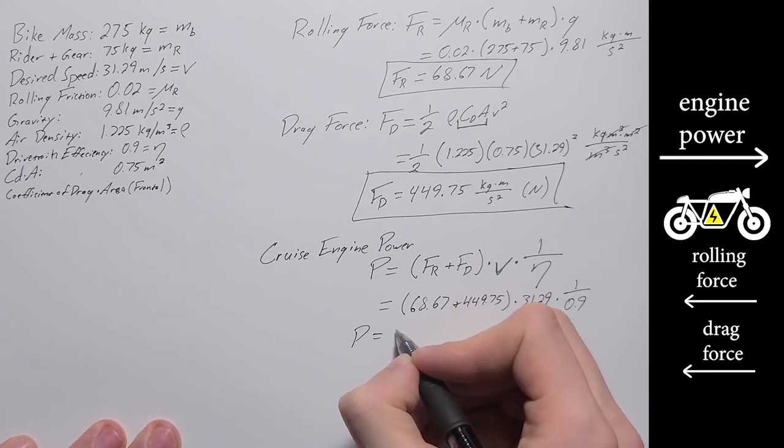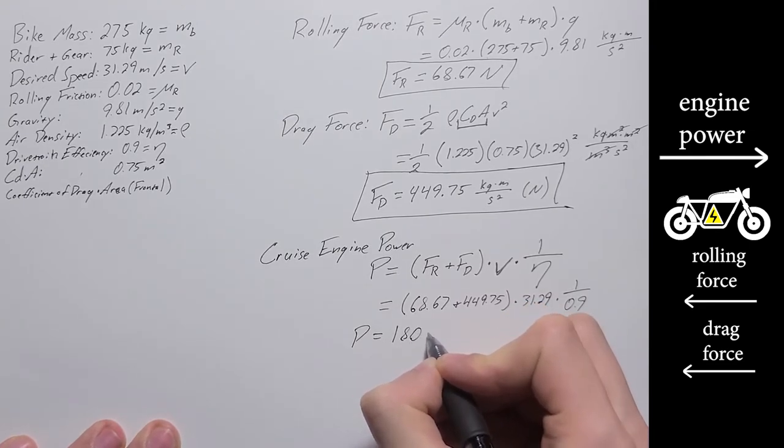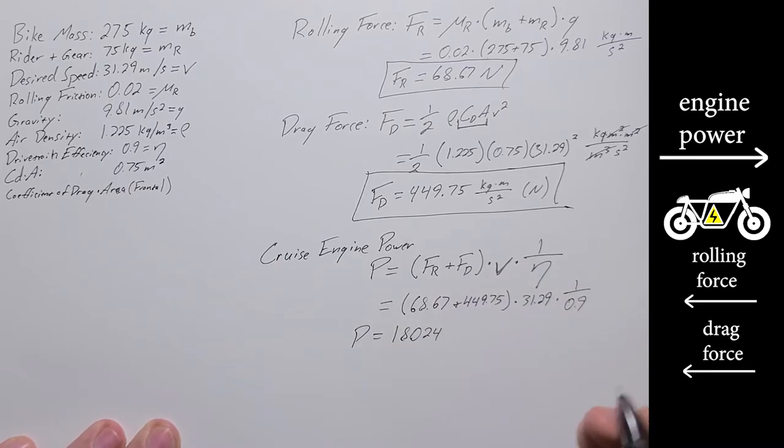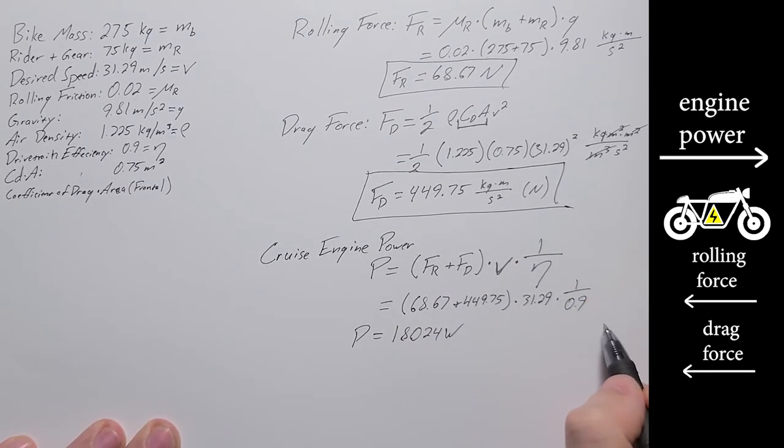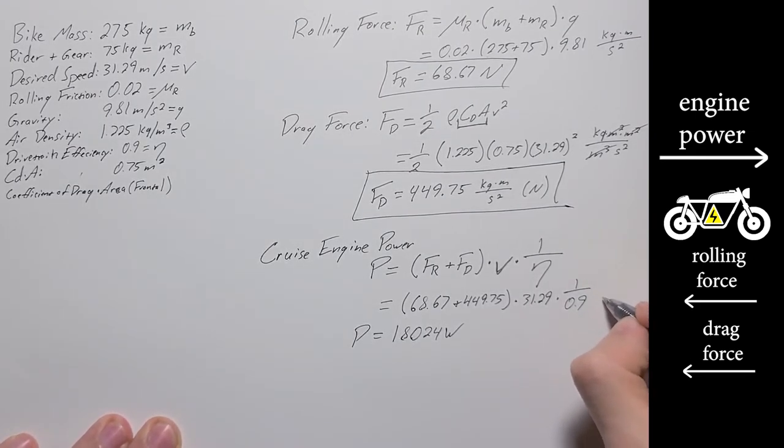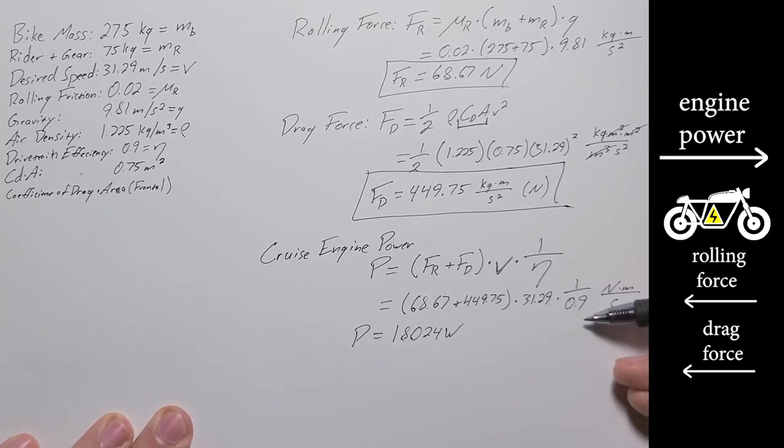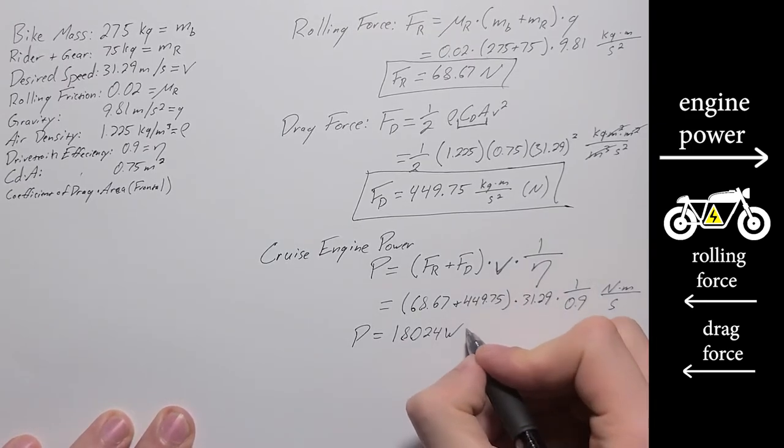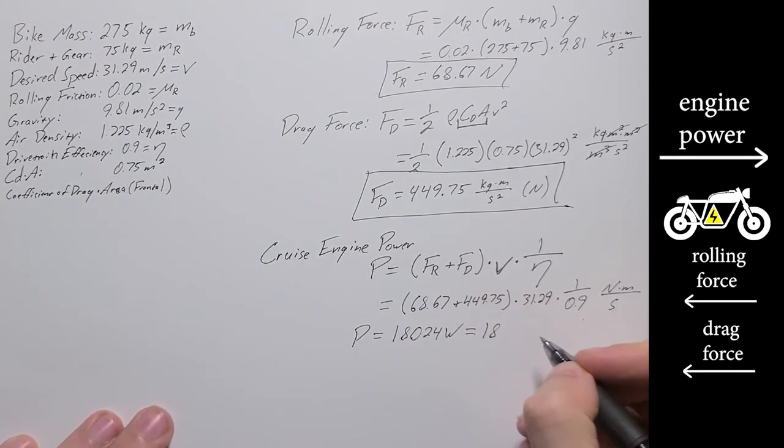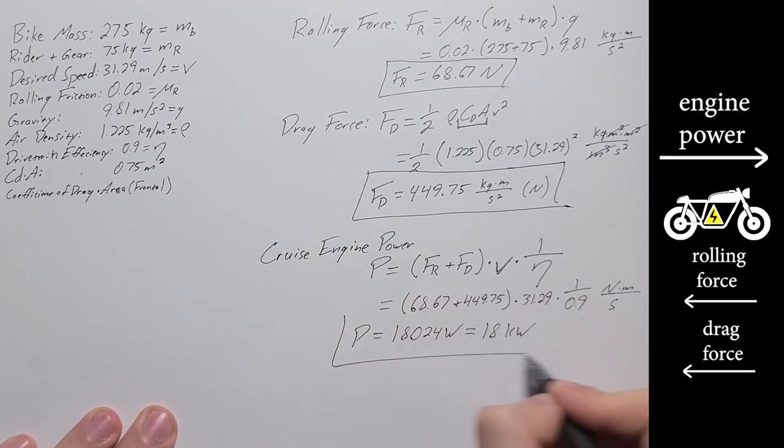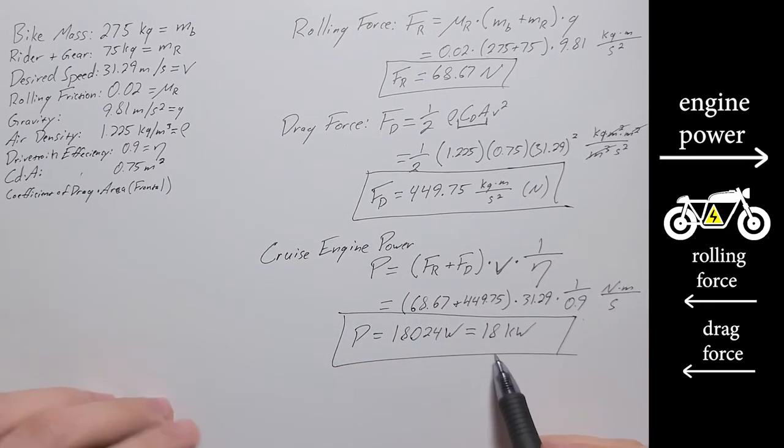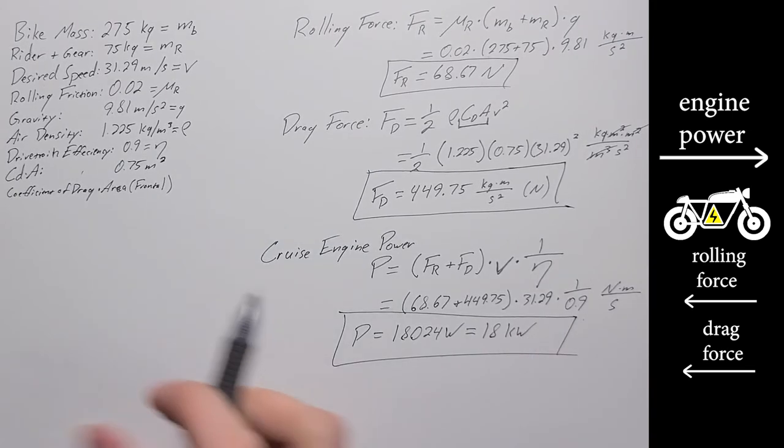So this power is going to come out to roughly 18,024 watts when you plug this strictly into a calculator. Checking the units on this real quick, we've got newtons times meters per second, and then this is unitless. So a newton meter per second is a watt, so units check out.